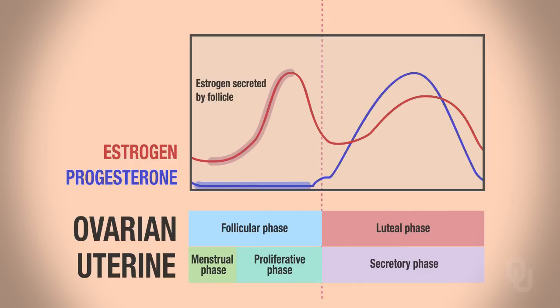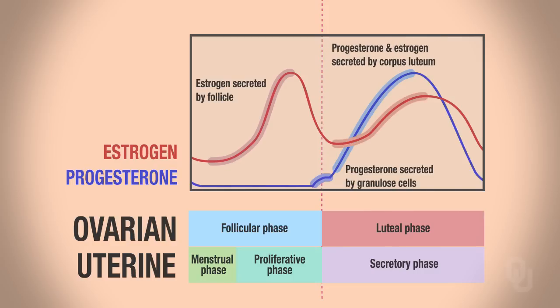Notice that there's no progesterone being secreted for quite some time, but then lo and behold, you have a little increase in progesterone there. Now that progesterone is secreted by the granulosa cells. After that little increase in progesterone, there's a large increase in progesterone. That large increase in progesterone, as well as this large increase in estrogen, are both due to the corpus luteum.